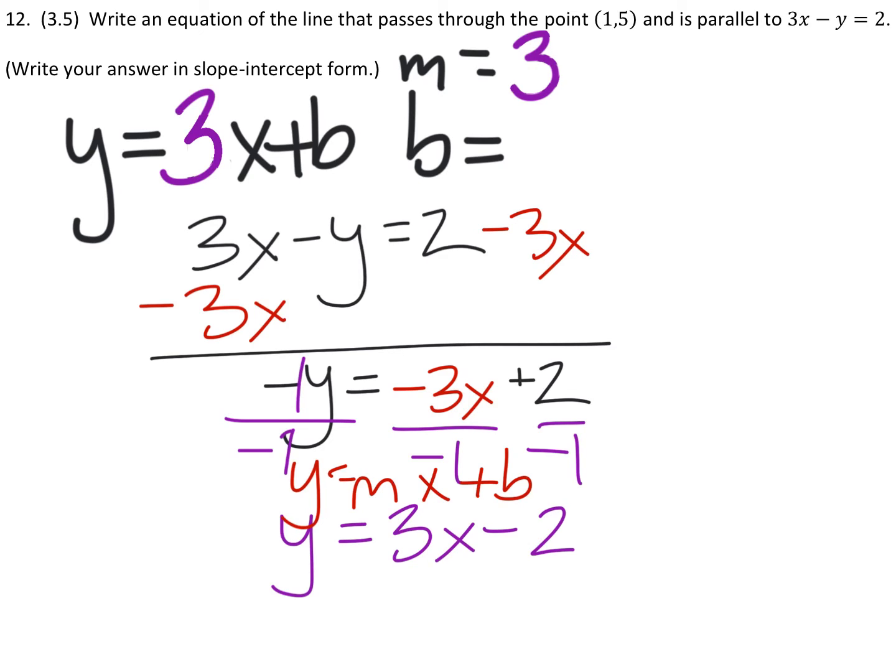Now, the other way we could have done that was to just look at the a and b values from standard form, which you can see here in the top right. And if we want the slope, all we need to do is take the negative value of a and divide it by b, and we would get negative 3 over negative 1. And I got those values, again, from this equation, 3x minus y equals 2.